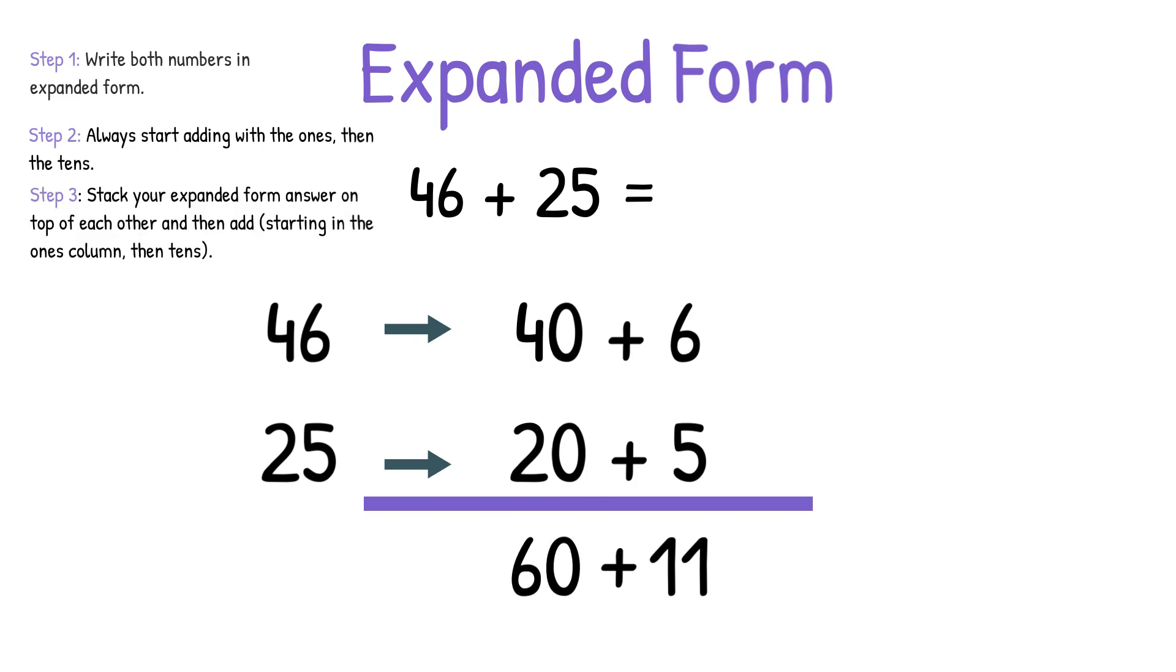Step 3 is stack your expanded form answer on top of each other, and then add, starting in the 1s column, then the 10s. 0 plus 1 equals 1, and 6 plus 1 equals 7. So we got 71 again. We got the same exact answer using two different strategies. Let's try one more.